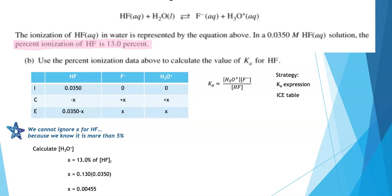And here's where the tricky part comes in. We cannot ignore X for HF because we know that it is more than 5%. And so many of these problems where we know Ka, we know that the value of X is small and we ignore it for that initial acid concentration. We cannot do it in this problem because it's greater than 5%. And this is the number one mistake students made on this problem. In fact, I made this mistake my first time working through this problem because we get so used to ignoring X for the weak acid. We can't here. Taking that into account, we know X is 0.00455. So we have to subtract that from the initial concentration of HF. And so our equilibrium concentration of HF is 0.03045 molar.